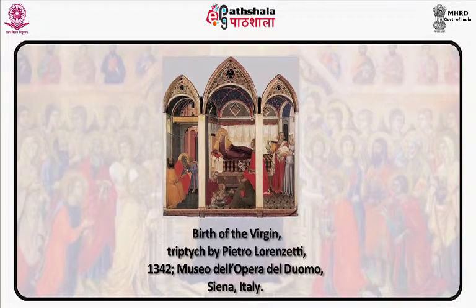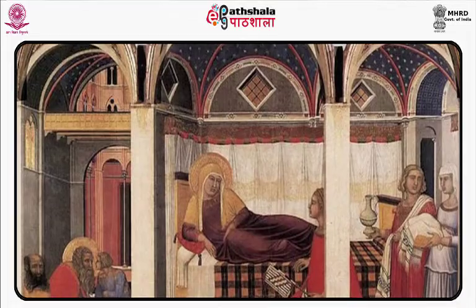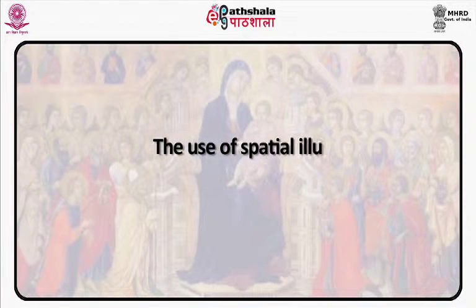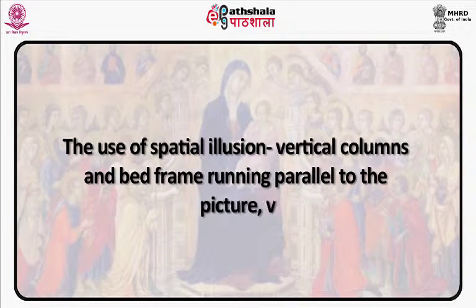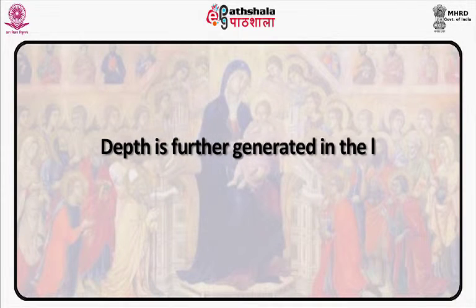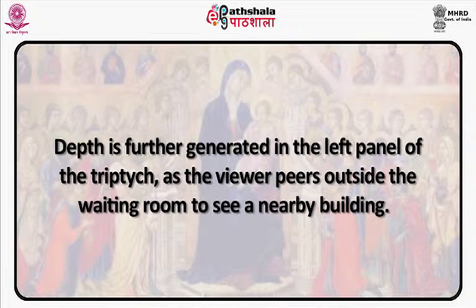Now see Picture 11, Birth of Virgin, a triptych by Pietro Lorenzetti. Birth of Virgin was the third painting in a series completed for the Sienese Cathedral, beginning with Duccio's Maesta and including Simone Martini's Annunciation. The use of spatial illusion, vertical columns and bed frame running parallel to the picture plane, and vaulted ceilings adds dimension to the rooms. Depth is further generated in the left panel of the triptych as the viewer peers outside the waiting room to see a nearby building. Duccio, Simone, and Lorenzetti were all members of the Sienese School. In contrast to Duccio's regal depiction of the Virgin in the Maesta and Simone's Annunciation with a supernatural scene, the Birth of the Virgin is notable for Lorenzetti's representation of the Virgin in a corporeal setting.